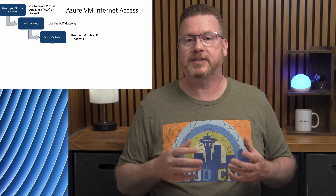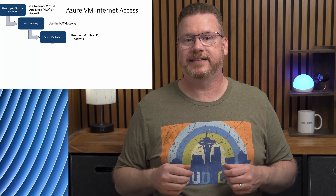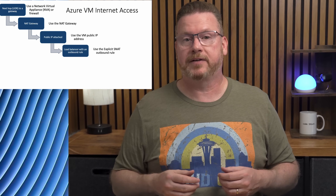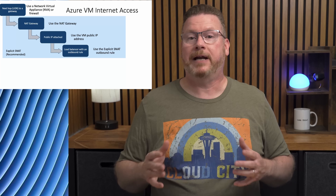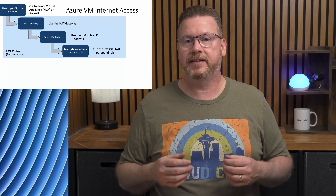For example, this could be to an Azure Firewall or a network virtual appliance provided by another vendor. Next, if an Azure NAT gateway is attached to the subnet, that's used. After that, if the VM has a public IP address, that's used to access the internet. Next, if the VM is part of a standard public load balancer with an outbound rule configured, the load balancer's public IP is used. The NAT gateway, NIC public IP, and load balancer with an outbound rule all utilize explicit source network address translation, or SNAT, for internet access.